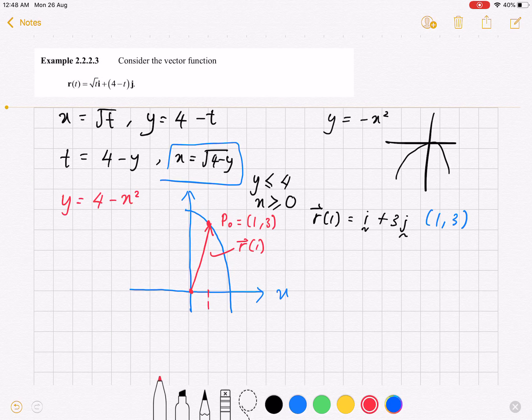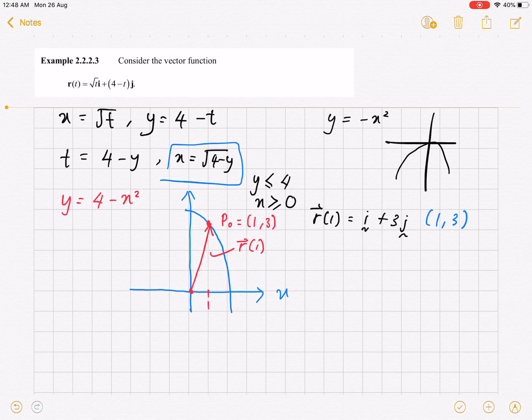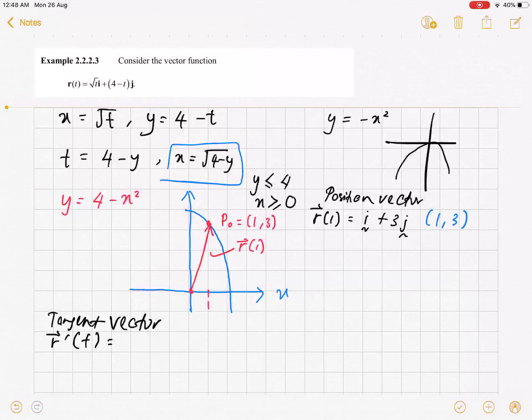Next, find and sketch the tangent vector. First thing, you have to differentiate the r. Be careful, we have square root t, which is t power half. So when we differentiate this one, we will have half t to the minus half here, i, plus minus 1, j.